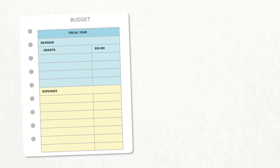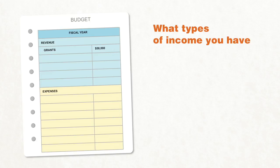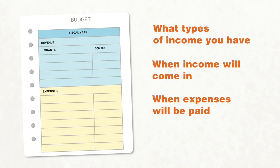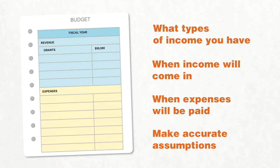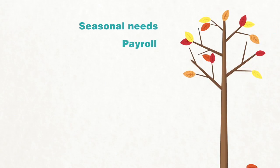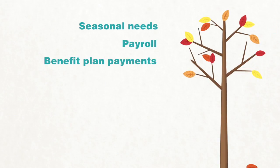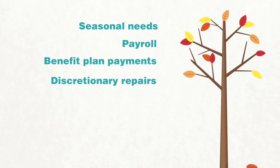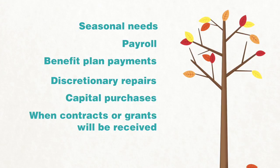Cash flow planning begins with a realistic budget. It's important to understand what types of income you have, when income will come in, and when expenses will be paid. You'll need to make accurate assumptions about your cash flow over the course of the year. Plan for things such as seasonal needs, payroll, benefit plan payments, discretionary repairs, capital purchases, or the timing of when grants or contracts will be received.